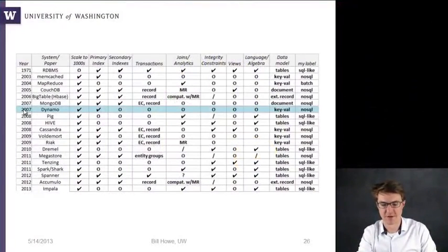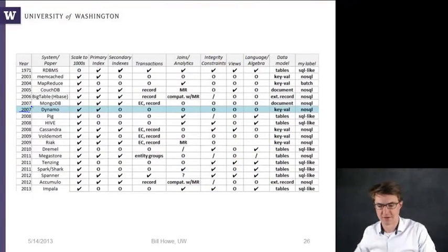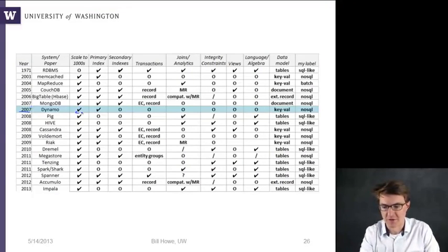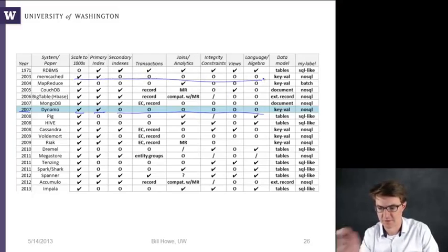Okay, so Dynamo from Amazon in 2007, which was a paper, and a few years later it's been released as a cloud service called DynamoDB. So here we're looking at scales to thousands of nodes. You can look up things by primary index and basically nothing else. It's just a key-value store, just like Memcache.